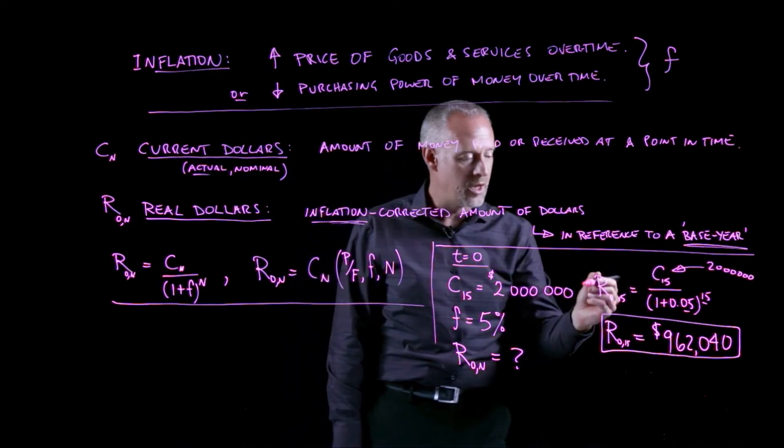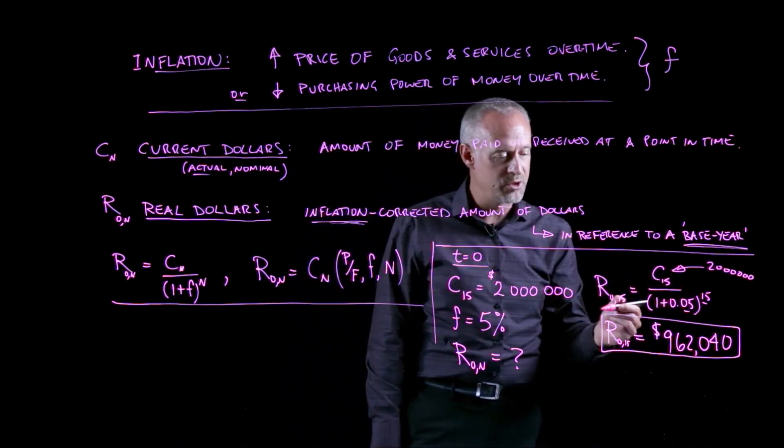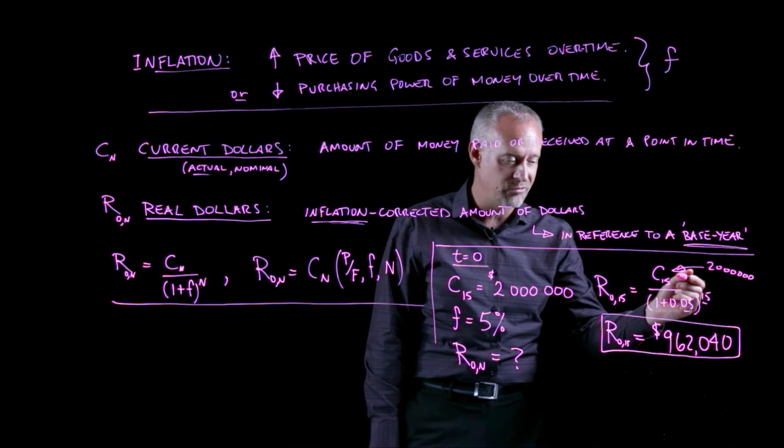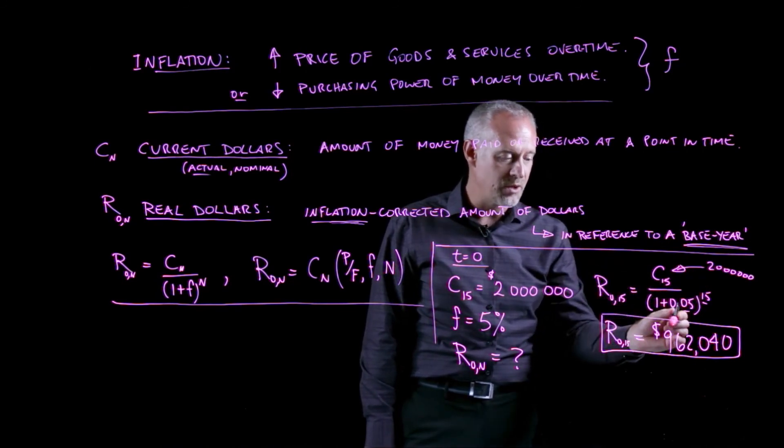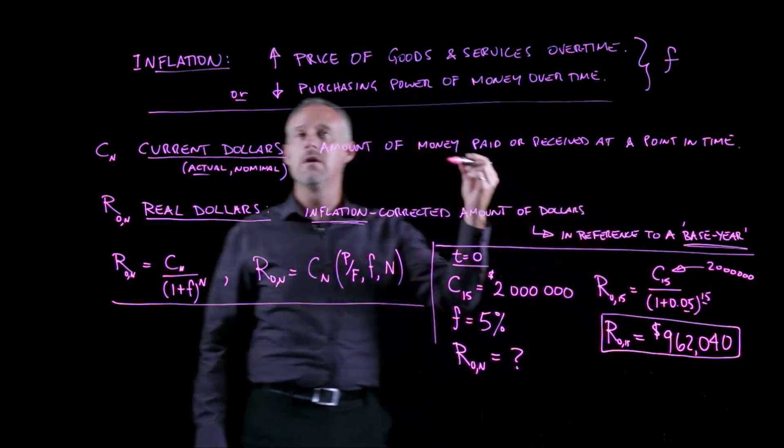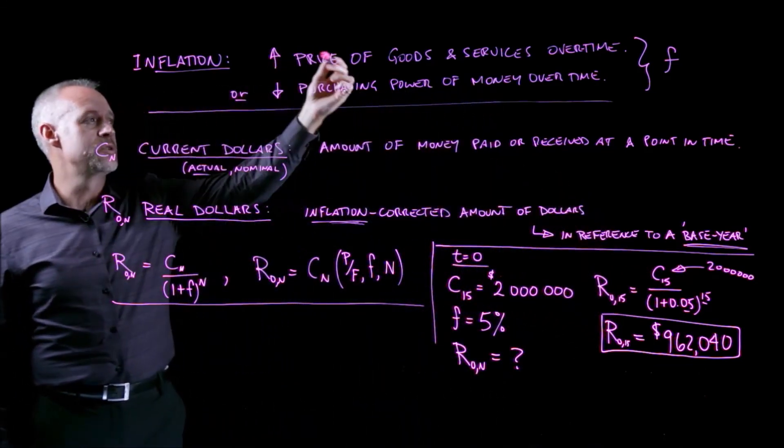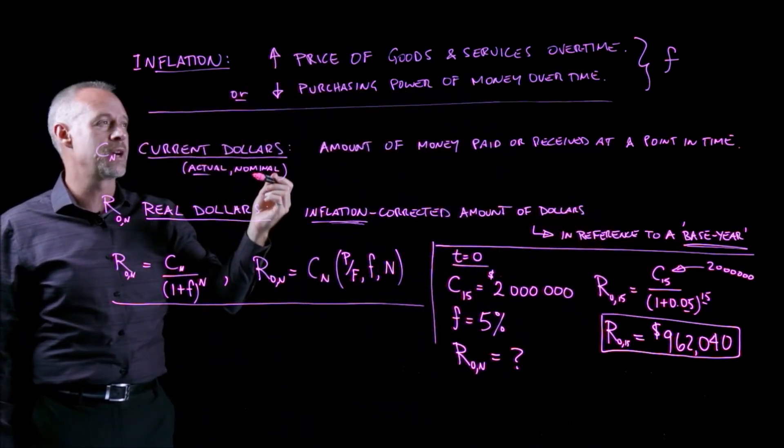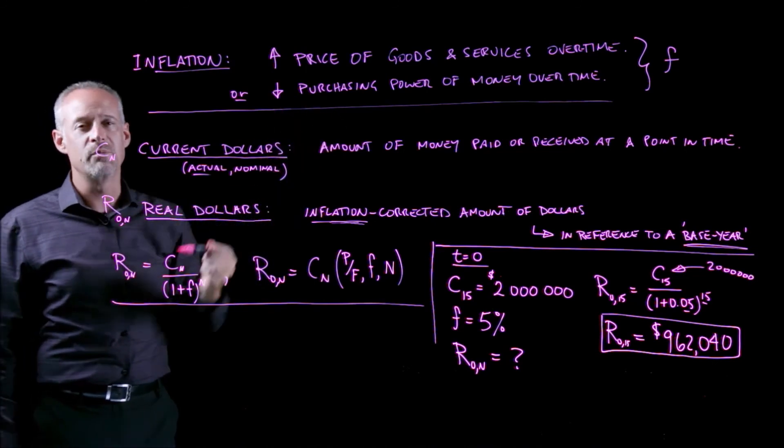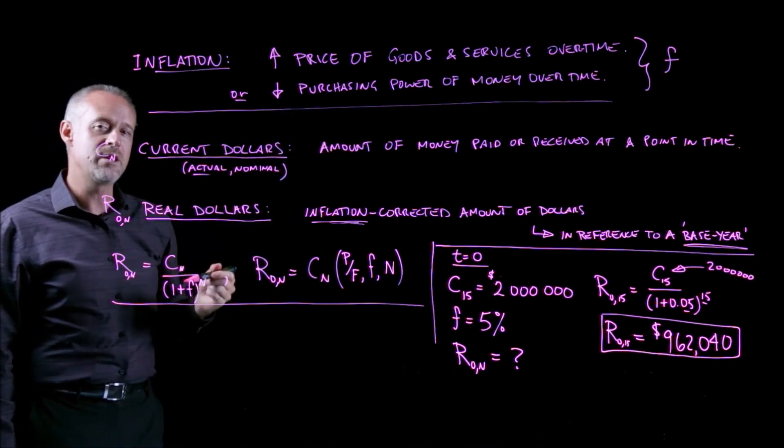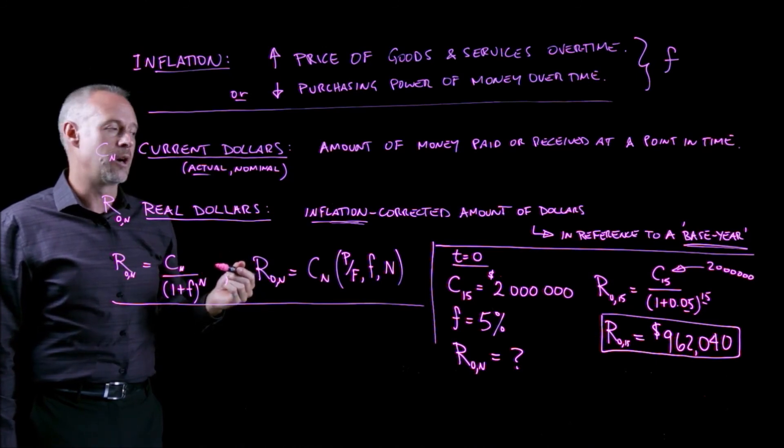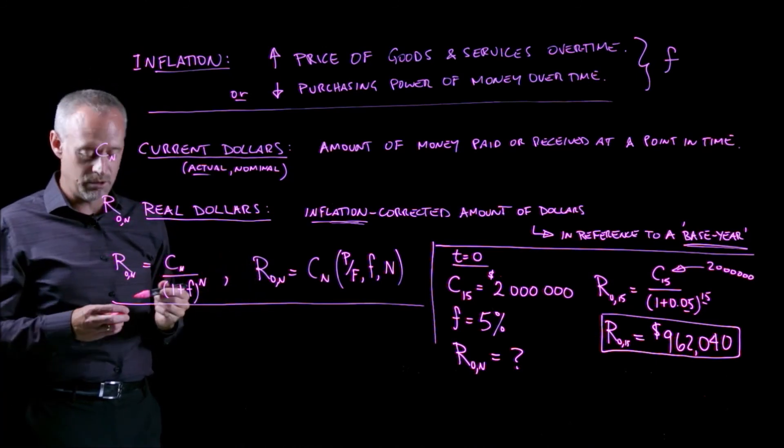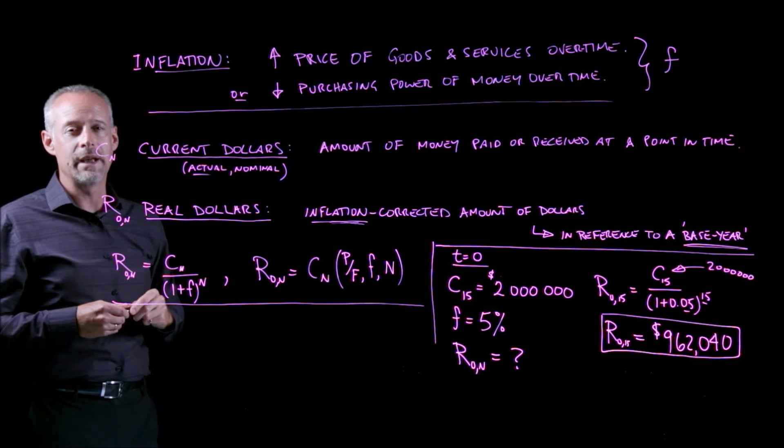So in concept, the mathematics are very similar to the time value of money calculations for interest. But the concept is really based on this idea that the prices of goods and services goes up over time, or that our purchasing power of our dollar decreases over time. So this is a very basic example on how to do calculations with real and current dollars and how to understand the concept of inflation.